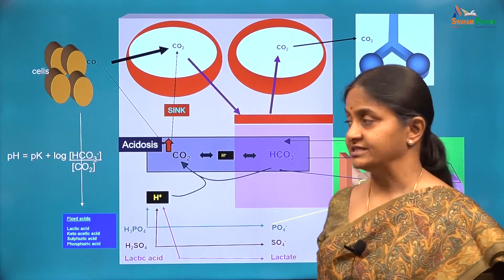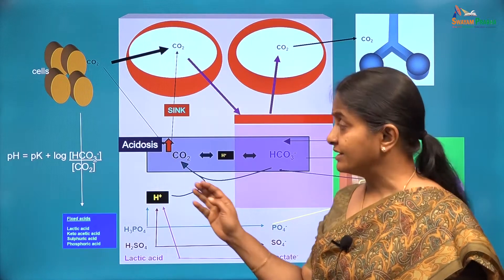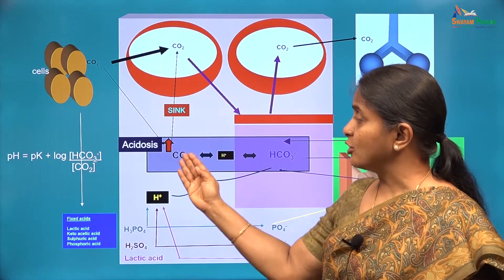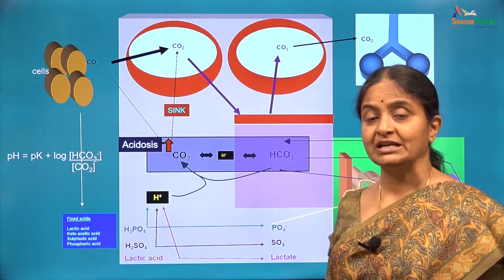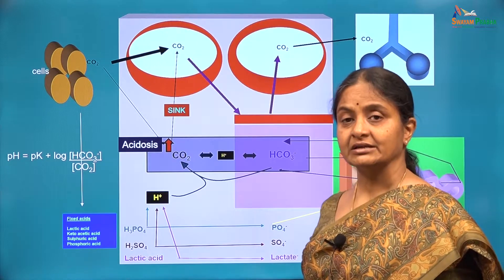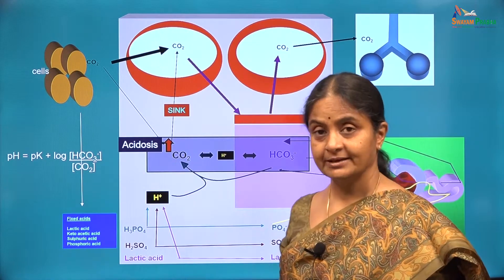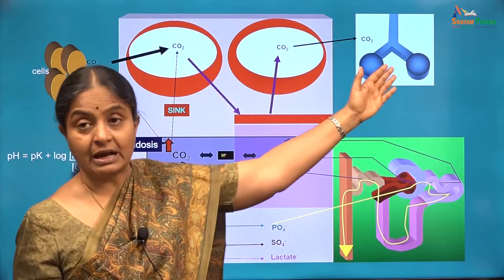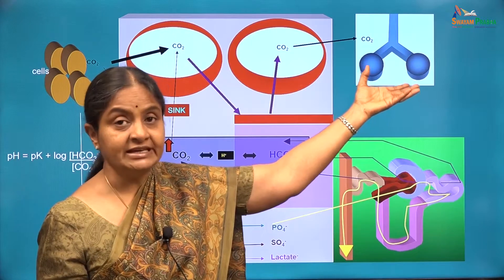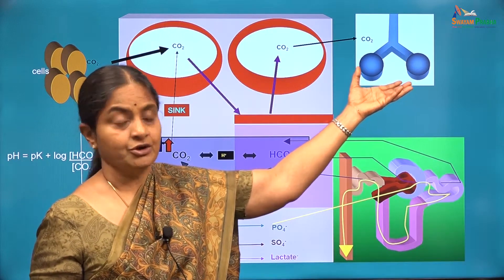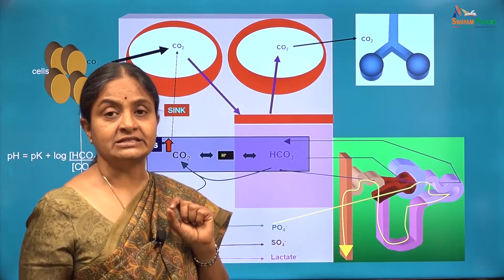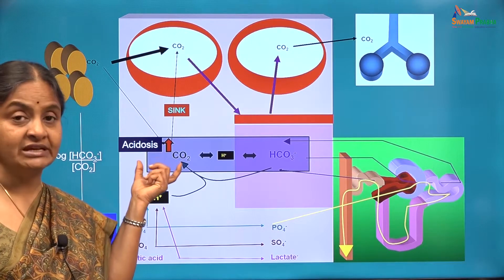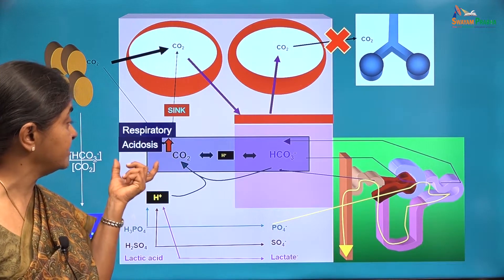The only cause for an increase in plasma carbon dioxide is when the removal mechanism is inadequate. Could red blood cells be a cause for inadequate removal? Even in anemic conditions, there is enough hemoglobin to buffer the carbon dioxide. That leaves us with the lungs as the only cause for inadequate removal of carbon dioxide from plasma. Ventilatory failure — hypoventilation or inadequate ventilation — is the one and only cause of increase in plasma carbon dioxide. Therefore, acidosis resulting from an increase in plasma carbon dioxide is termed respiratory acidosis.